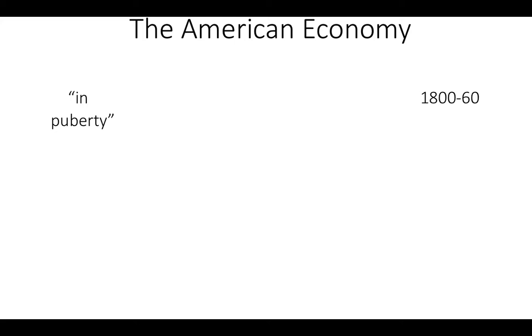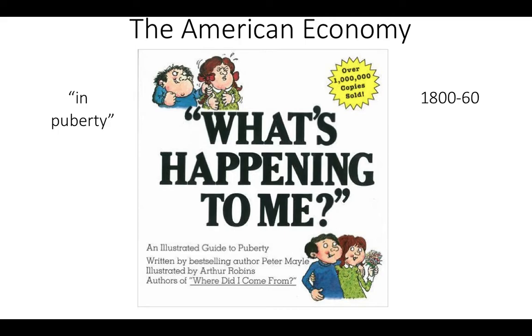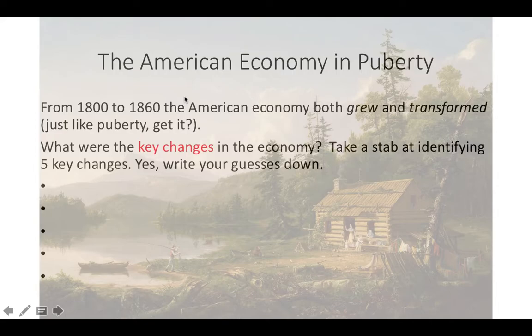American economy in puberty — there's the famous book 'What's Happening to Me?' The 1800s to 1860, early 1800s. The economy both grew, got bigger, and changed, transformed, just like puberty. What were the five key changes in the economy? Maybe pause the PowerPoint and take a stab at identifying the five key changes based on general knowledge or what we've talked about in class so far.